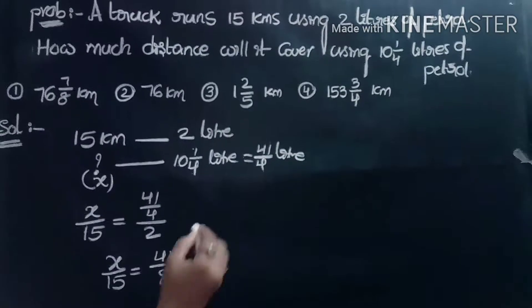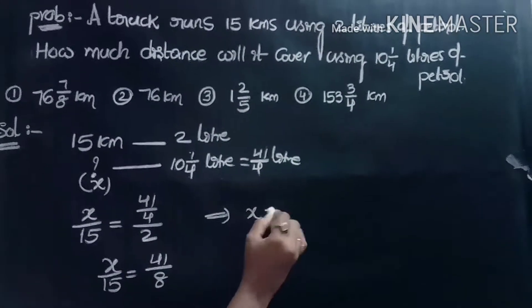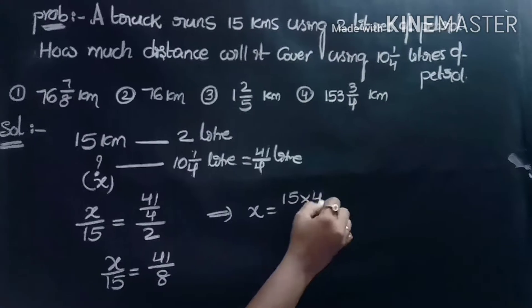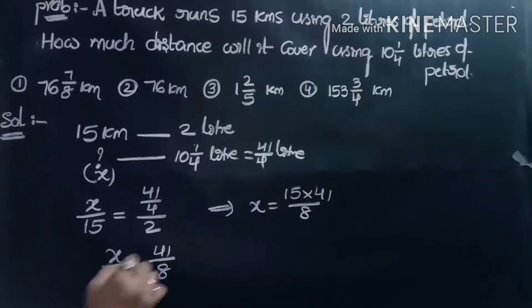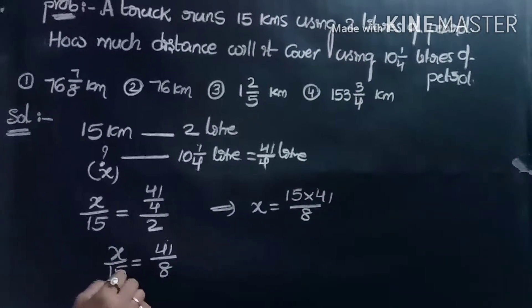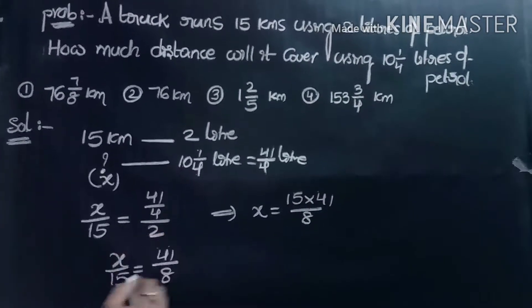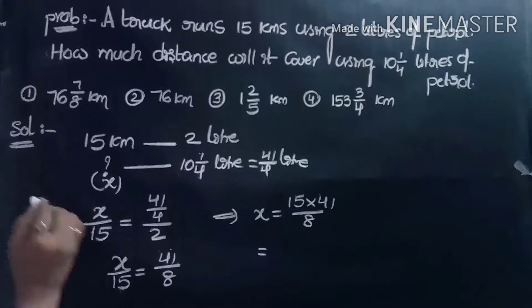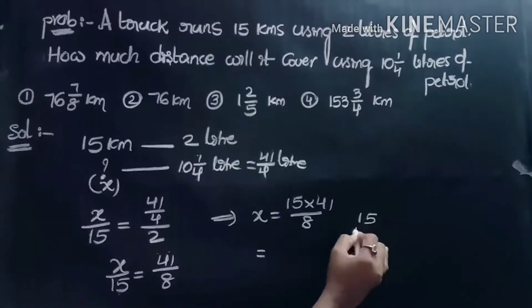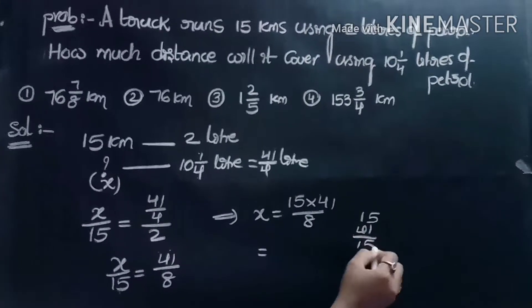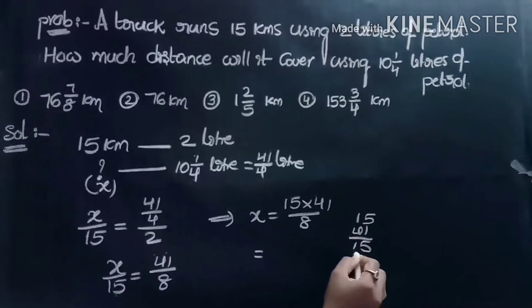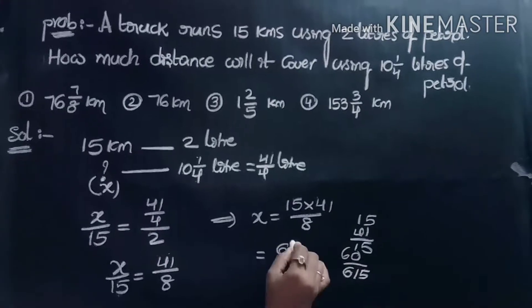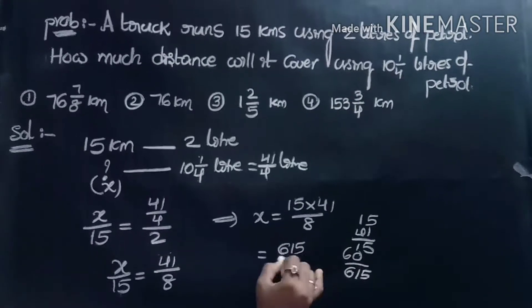4 into 2 is 8. So x = 15 into 41/8, by cross multiplication. Taking the product, 15 into 41 equals 615. That is, x = 615/8.